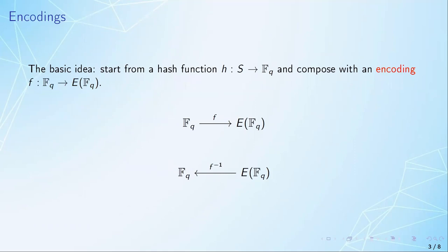The basic idea is that we obtain a hash into the curve by first hashing to the field of definition and then composing with an encoding function, which is a map from the finite field onto the elliptic curve points.